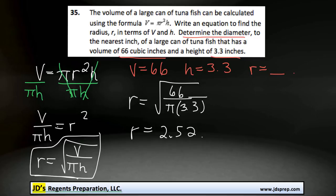Now of course to find the diameter, we're going to double that, so the diameter is 2 times 2.52. And that is, rounded to the nearest inch, is 5 inches.